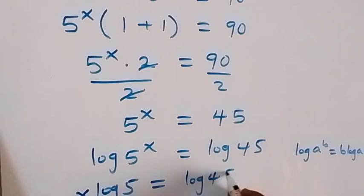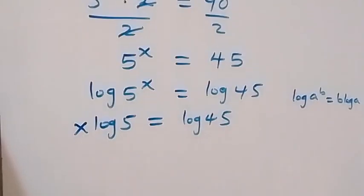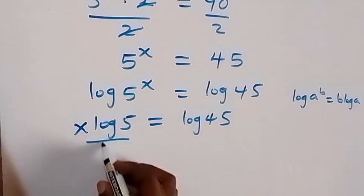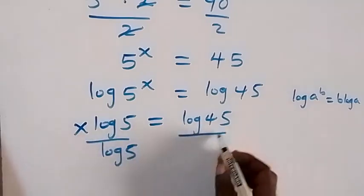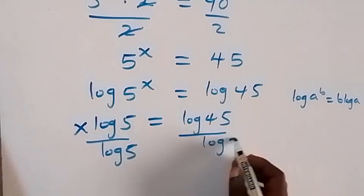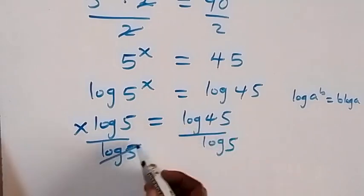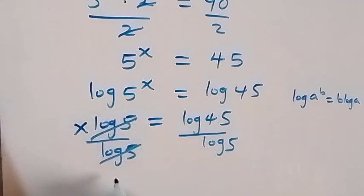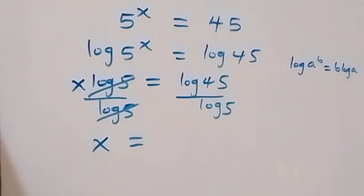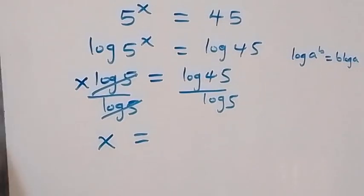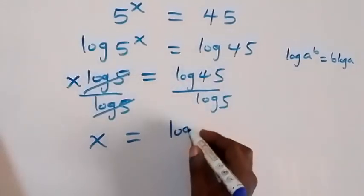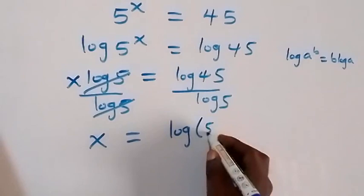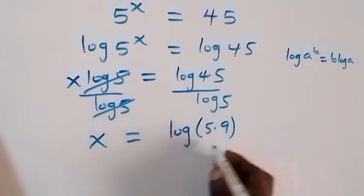To solve for x, we divide both sides by log 5. Log 5 cancels, so we are left with x equals log 45 over log 5. We also rewrite 45 as 9 times 5, so this becomes log(5 times 9) over log 5.